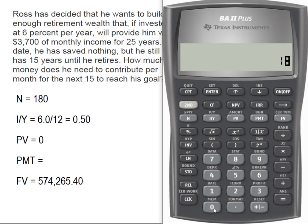So let's see what we've got. 180 payments is our N. His monthly interest rate, remember, was 0.50. Poor Ross has saved nothing, so present value is nothing. But we do know what that future value needs to be. And it needs to be the $574,265.40. And now let's compute the payment that's necessary in order to have that amount.